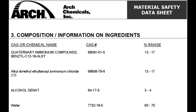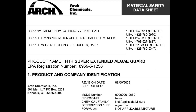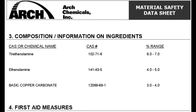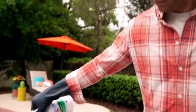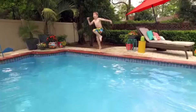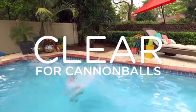Let's say you choose another HDH algaecide — how about HDH Super Extended Algae Guard? When we look at the SDS sheet — holy crap — it's copper-based. Why in the world would we want to add more metal and copper to a pool that already has way too much copper in it? That's enough of that.